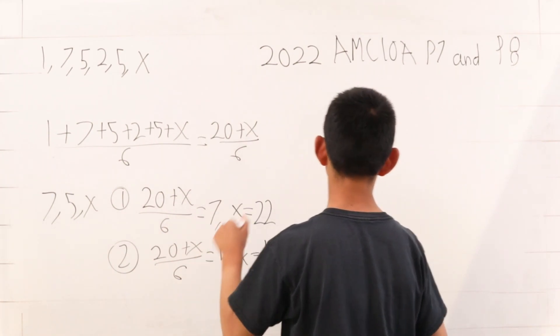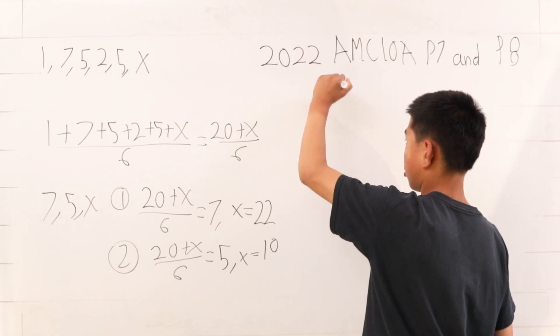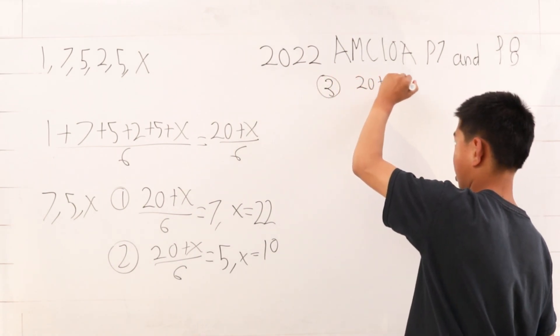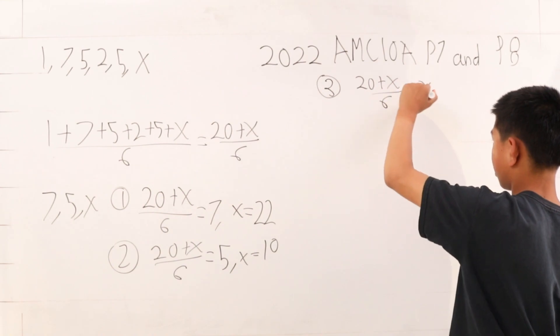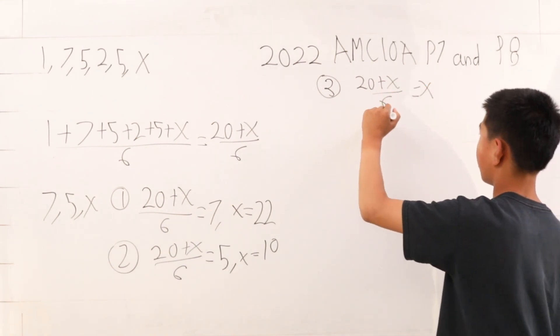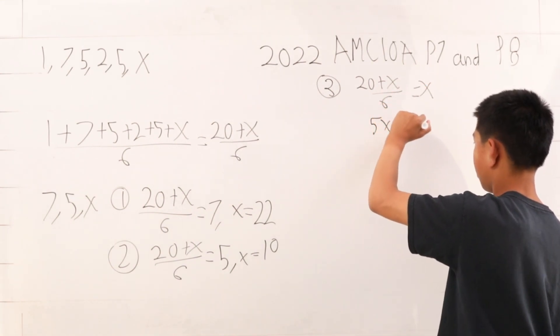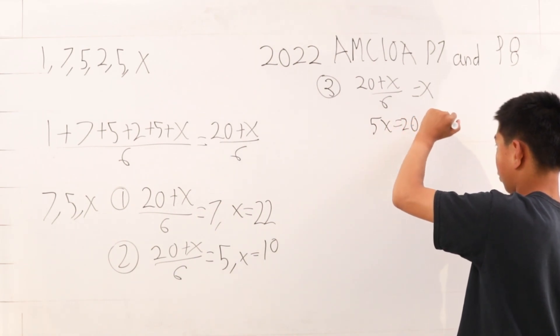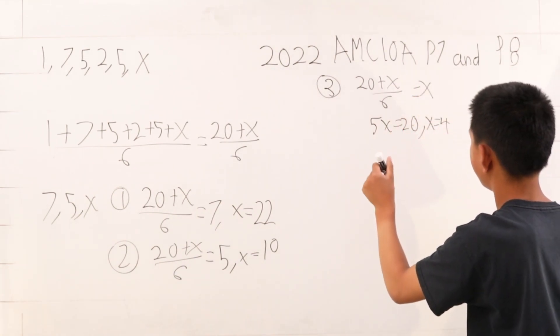And finally, our third case, where 20 plus x over 6 is x. Once we solve this, we get 5x is 20, x is 4. Simple algebraic stuff here.